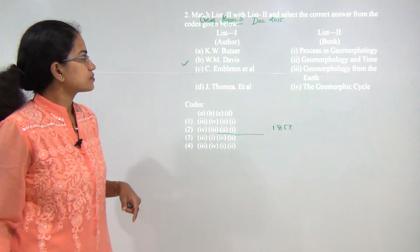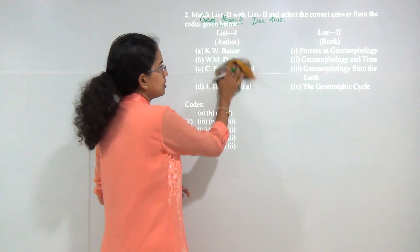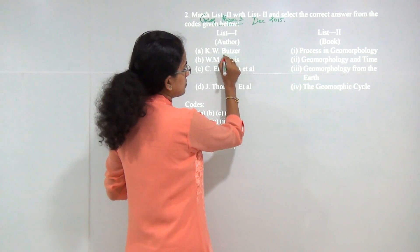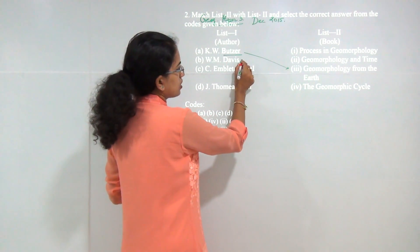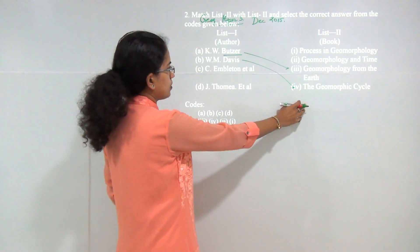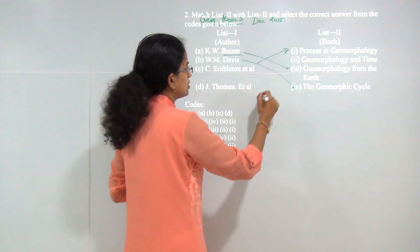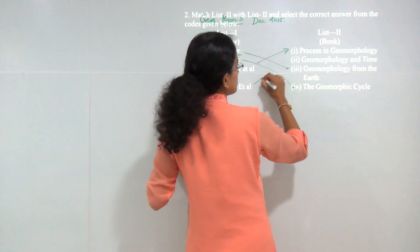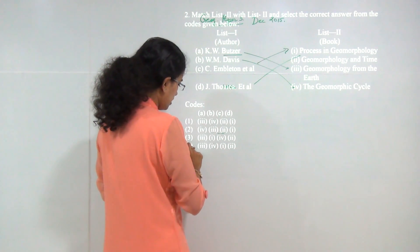The next question: you have some books and you have to match who was the author of which book. The correct answer is: Budzer wrote the book Geomorphology from Earth; Davis talked about the geomorphic cycles; Embleton talked about process in geomorphology; and finally Thorns talked about geomorphology and time. So these are the correct matches, and the answer here would be 4.